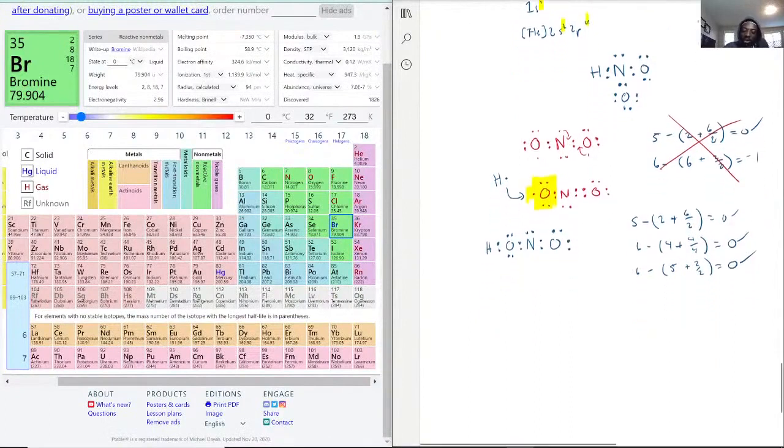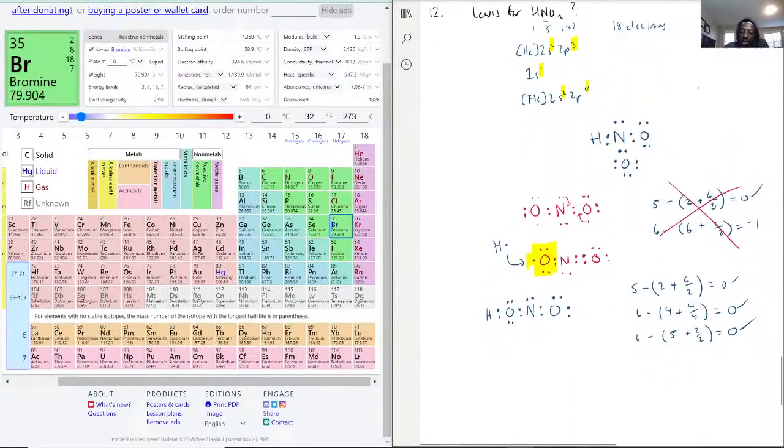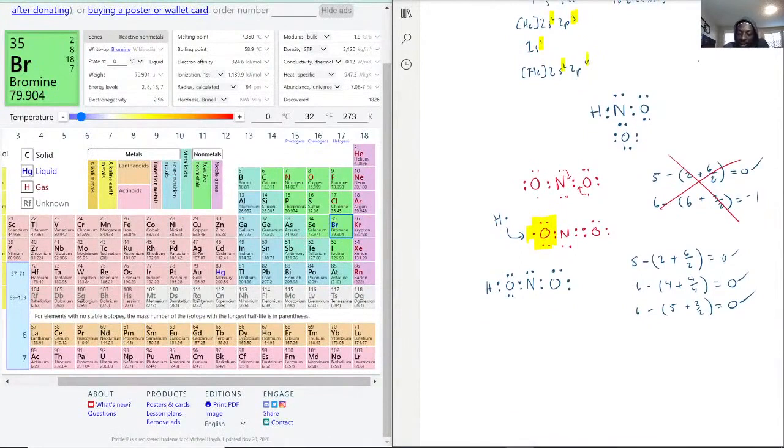So this is what we would have for the Lewis for HNO2. And then we check the math again. We know that the first oxygen already had that, and the second oxygen has the same thing.